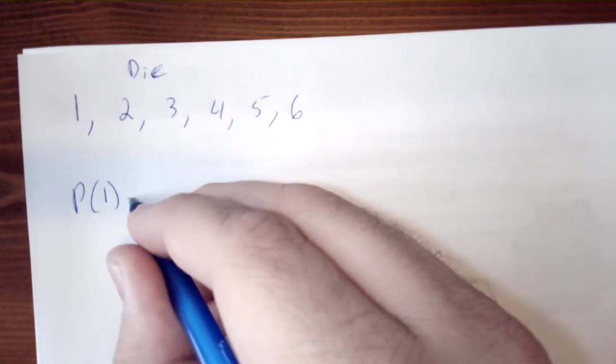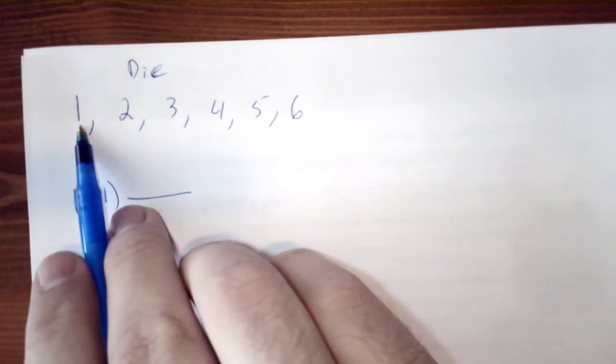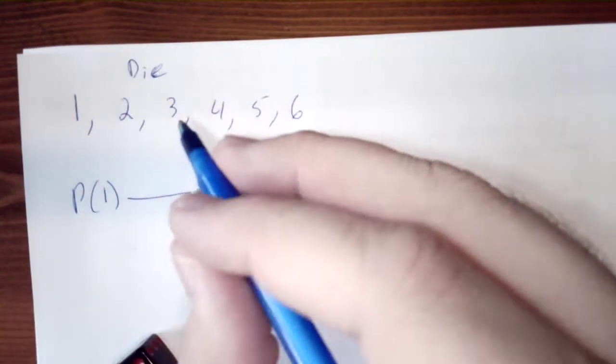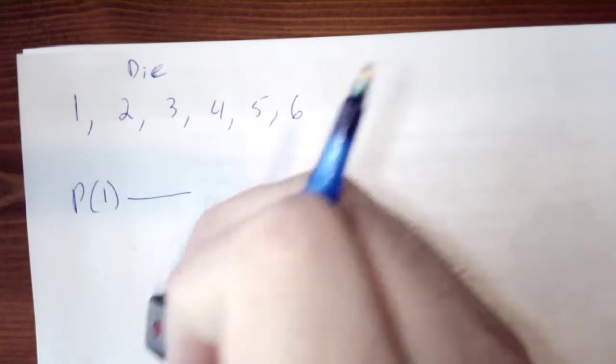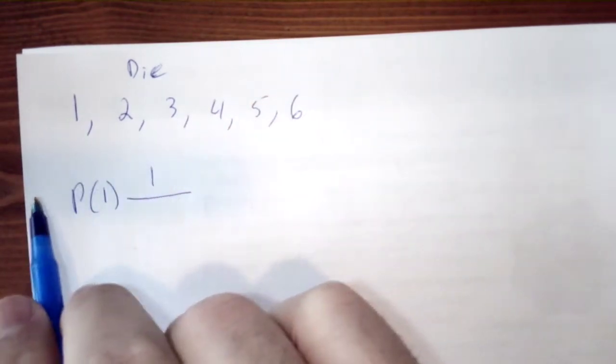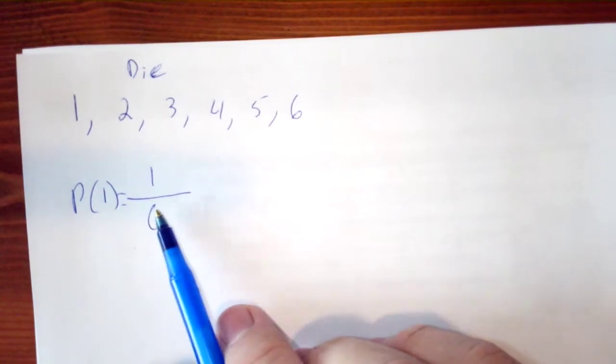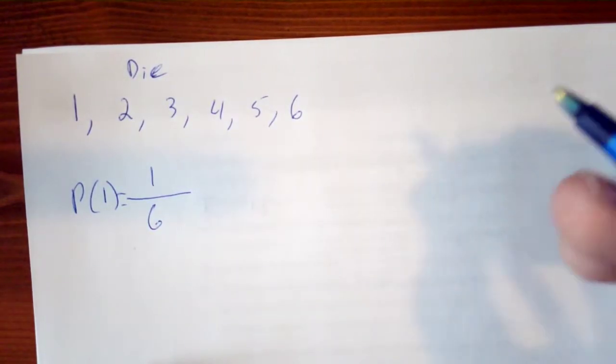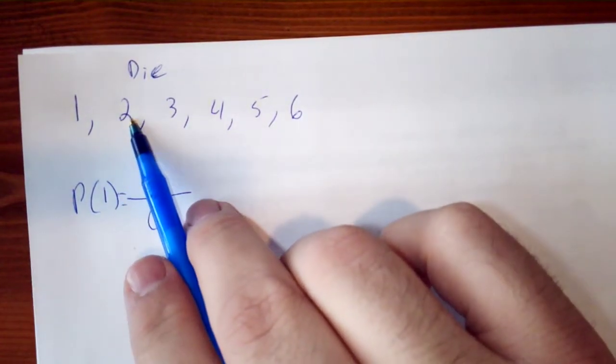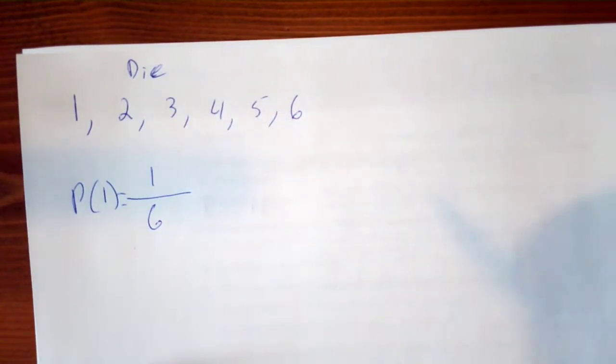Okay, well, we have one on this die and six possibilities. So our probability of rolling a one is one sixth. And that's what it's going to be for a two, for a three, for a four, for a five, for a six.